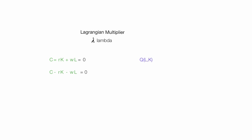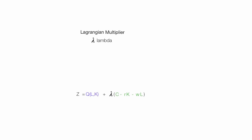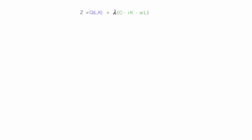Now I set up the main equation: Z is equal to the function of capital plus lambda times the constraint equation, lambda times the whole thing. I'm going to rewrite this as Z equals the quantity which is a function of labor and capital, plus — multiplying lambda all the way through — lambda times cost minus lambda times R times K minus lambda times W times L.